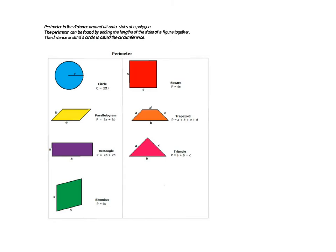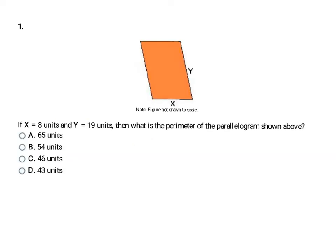Let's define perimeter. Perimeter is the distance around all outer sides of a polygon, and it can be found by adding the lengths of the sides of a figure together. Everything here except the circle is a polygon, so we can use the given formulas or simply add all side lengths together. The distance around a circle is called circumference, and we use the formula: circumference equals 2 times pi times radius.